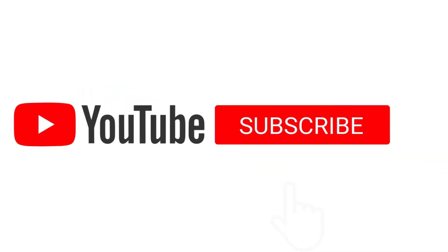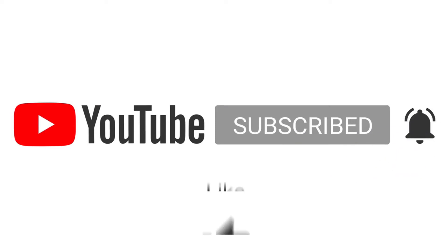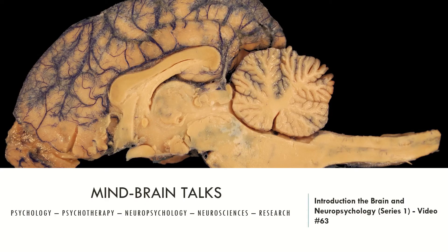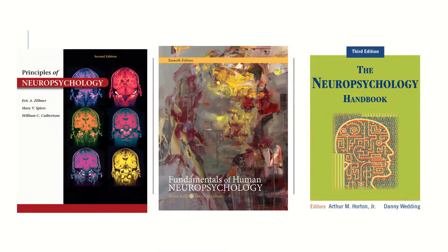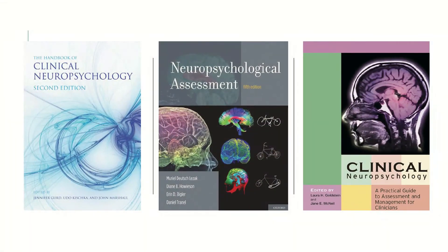So, without further delay, let's jump for today's content. Today's video is concerning the brain. In this lecture, I'll show you the several major points that we can use to study the brain. But first, let's see the books that I recommend to you. The first is the Principles of Neuropsychology. The second is the seventh edition of the Fundamentals of Neuropsychology from Brian Kolb and Ian Whishaw. The third book is the third edition of the Neuropsychology Handbook. The fourth is the Handbook of Clinical Neuropsychology, second edition. The fifth book is the Neuropsychological Assessment from Lezak. And the sixth is the Clinical Neuropsychology from Laura Gunstein and Jane McNeil.